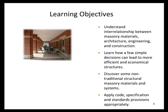I want you to take away from this the inner relationship between masonry materials, architecture, engineering, and construction. I'm going to give you a few simple tips and talk about the decisions you make in engineering that can lead to more efficient and economical structures. We're going to talk a little bit about some non-traditional structural materials, systems, and innovations, and we're going to talk about code, specifications, and standards and how to apply them appropriately.